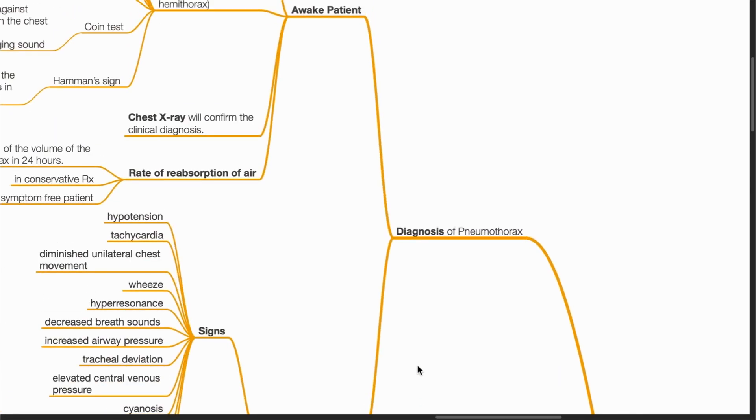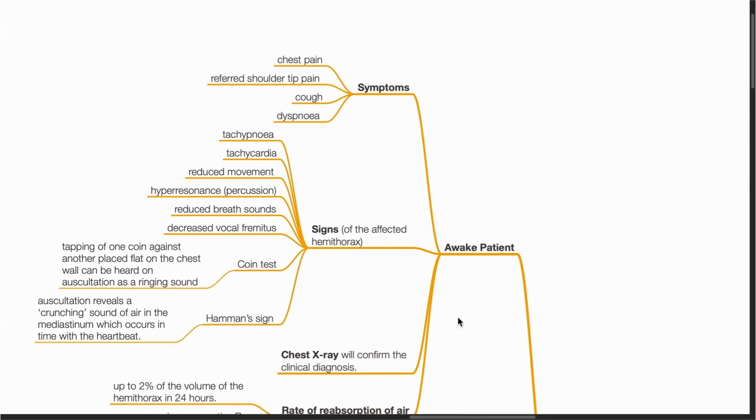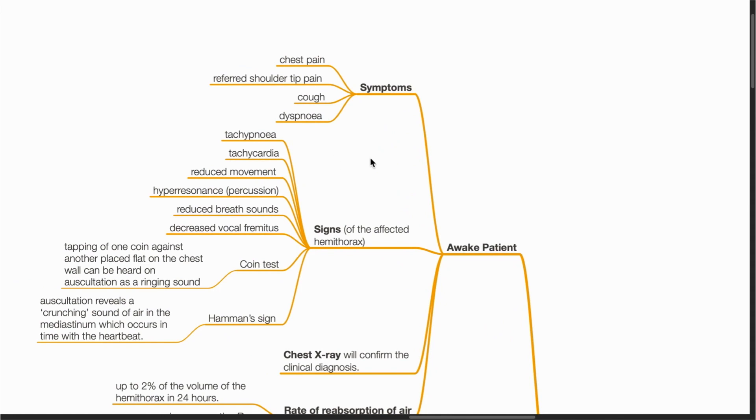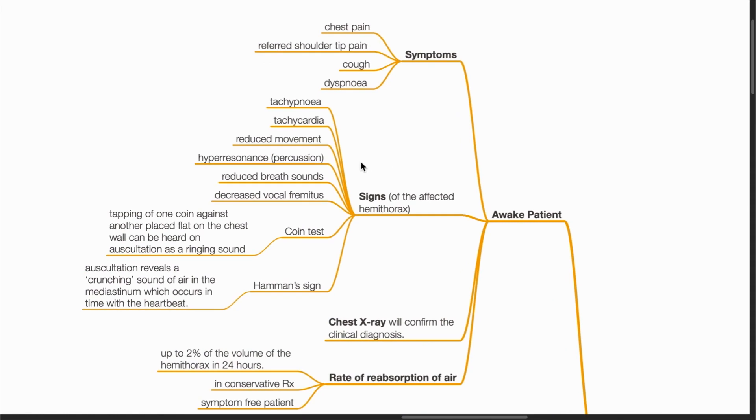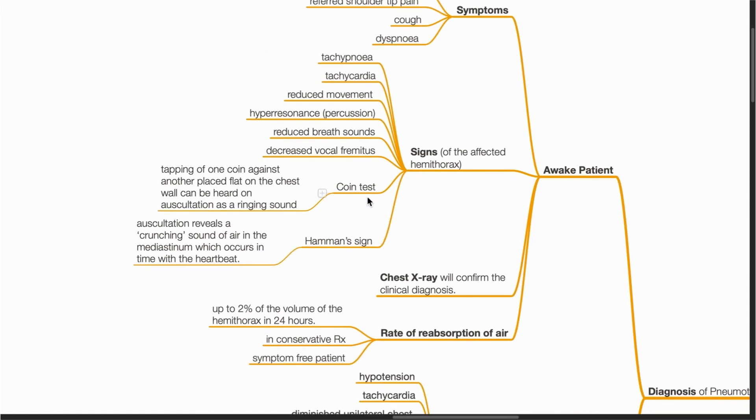To diagnose pneumothorax in the awake patient, they might complain of chest pain, cough, shortness of breath, or referred shoulder tip pain. Signs include tachypnea, tachycardia, reduced chest wall movement, hyperresonance on percussion, reduced breath sounds, decreased vocal parameters of the affected side. And there are tests such as the coin test and Haman sign to assist in diagnosis.